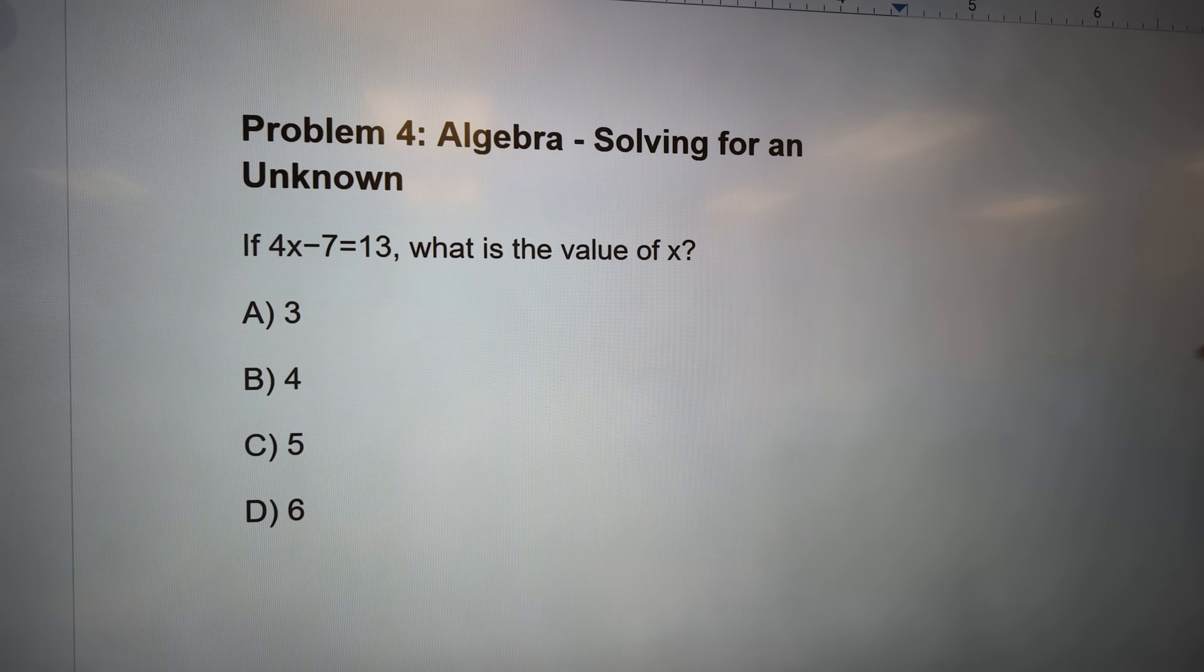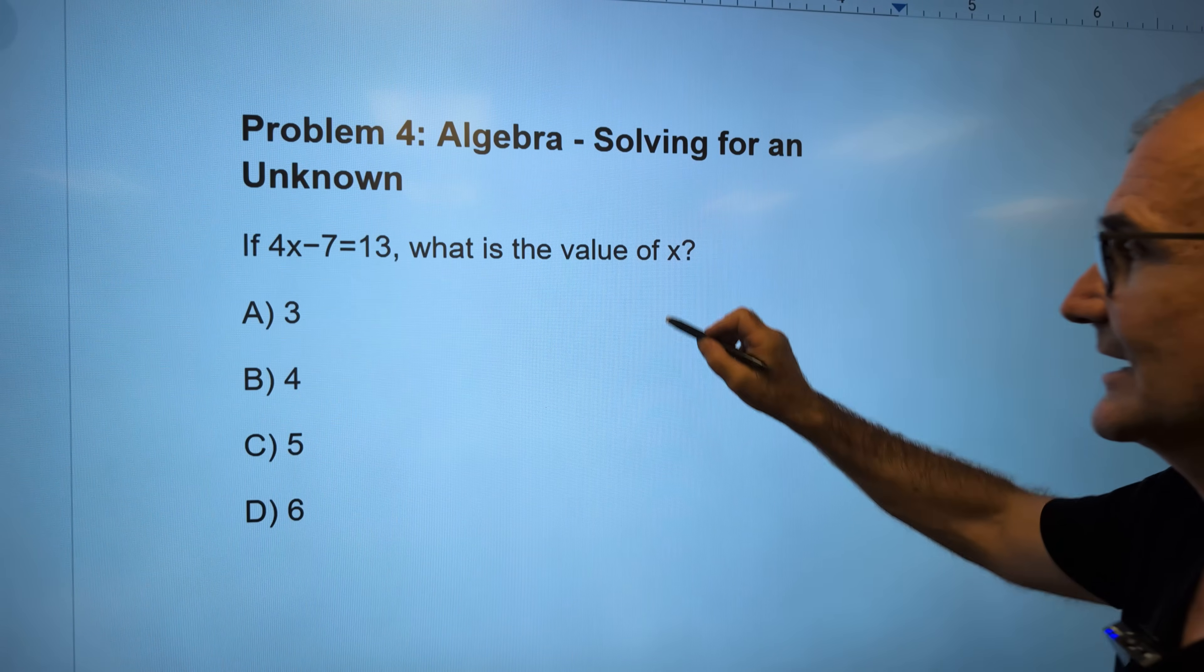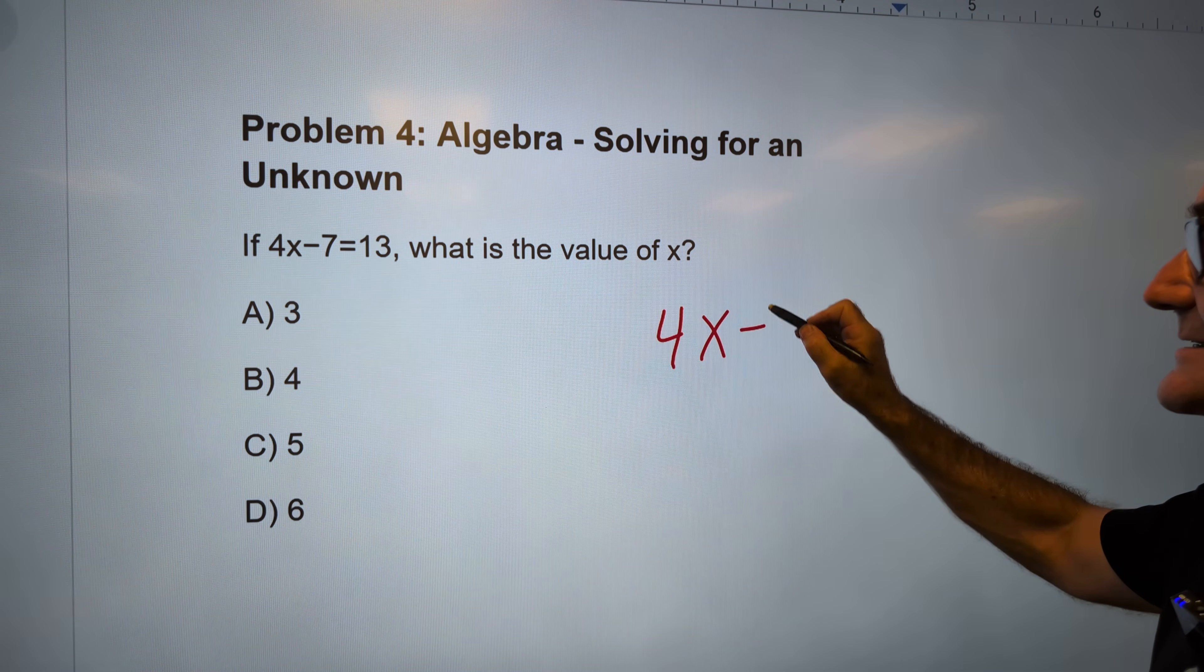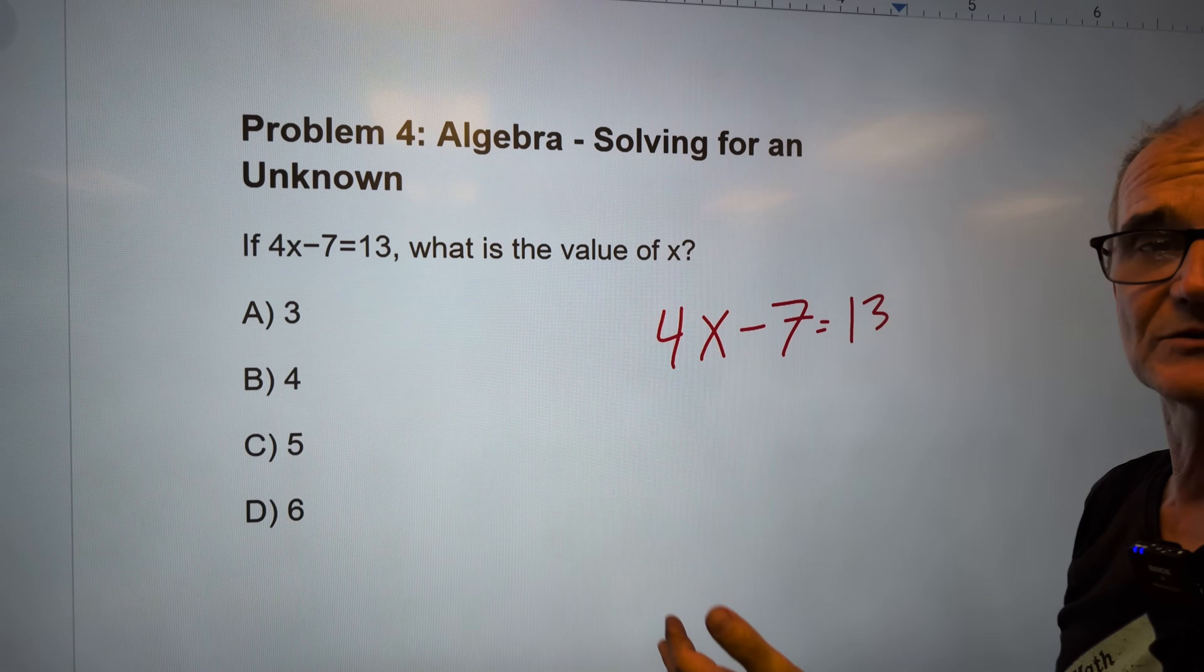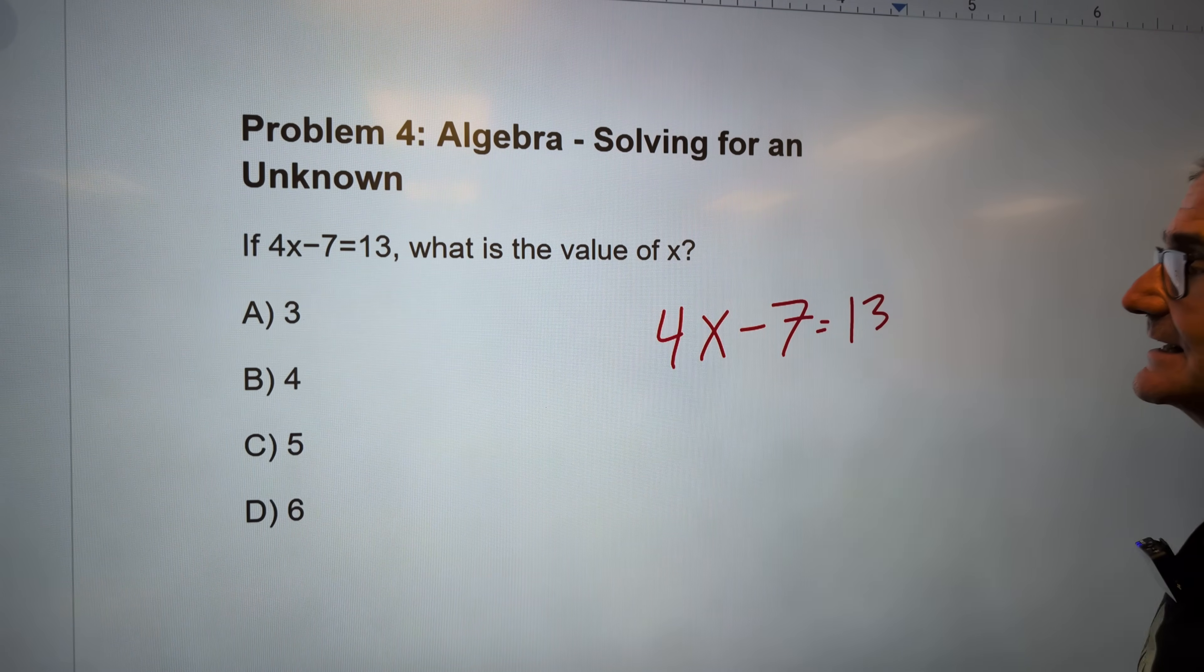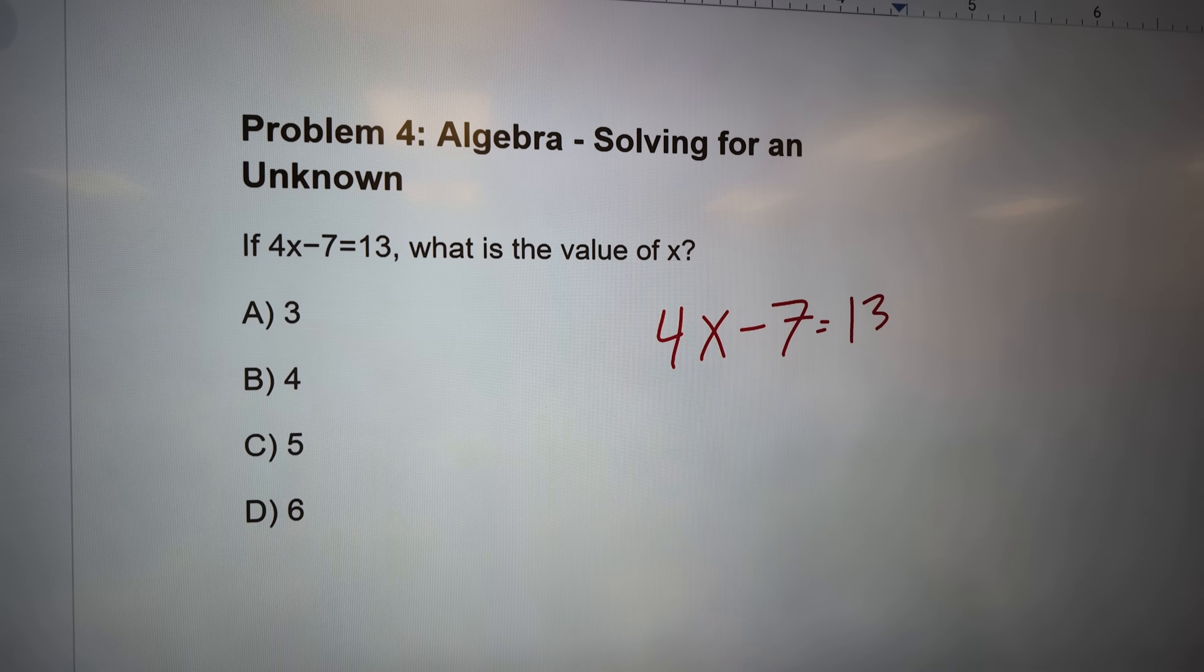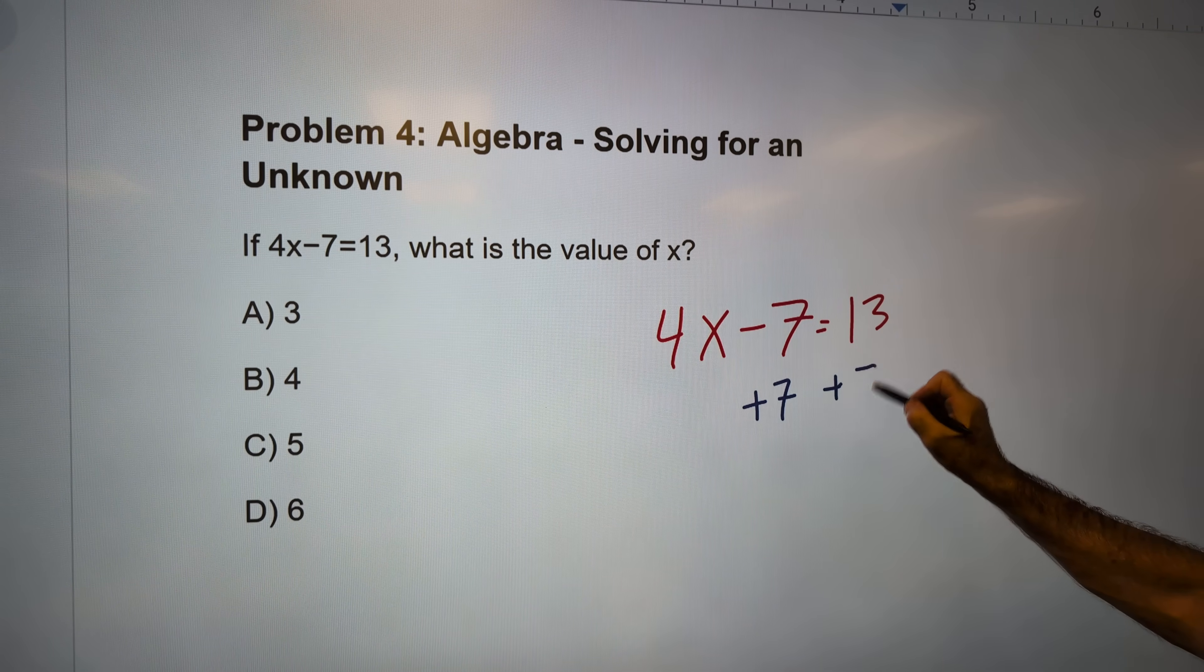This is an algebra problem right here. What we need to do here is isolate the variable x. So I have 4x-7=13. This is opposite the order of operations because I'm trying to undo this thing. I'm trying to go backwards and get that x by itself. If I want that x by itself, first, I'm going to get rid of that 7. So I'm going to add 7 to both sides.